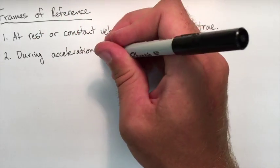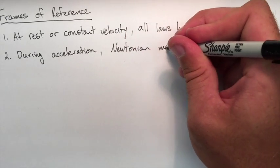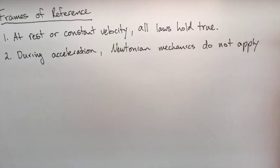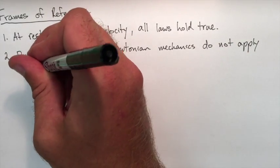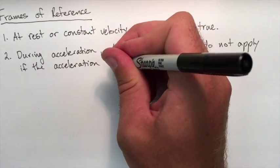If we're accelerating in a non-inertial frame of reference, Newtonian mechanics do not apply if that acceleration is unknown. If we don't know that acceleration, we're not going to be able to use the laws of physics to calculate how high or how far or how long a ball is in the air.